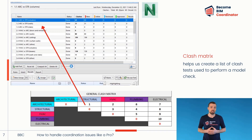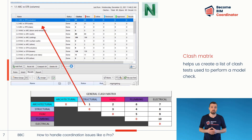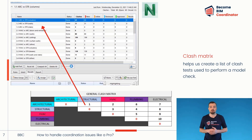By using a clash matrix, I can easily create a list of clash tests to use in the coordination program. For example, here you can see a clash test I created in Navisworks. Note how the numerical order of clash tests corresponds to the numerical order in the clash matrix. It gives a clear picture of which clash test should be prioritized — the higher the number on the list, the higher the priority.